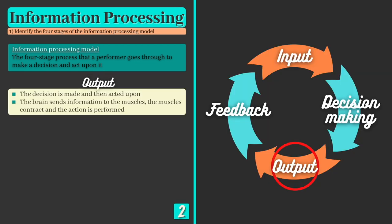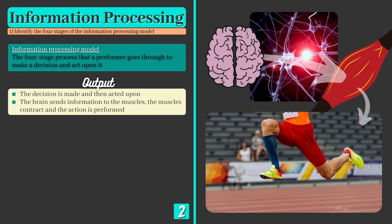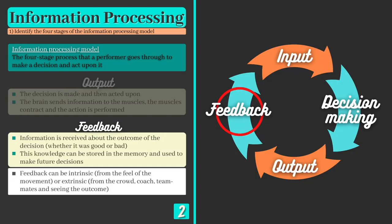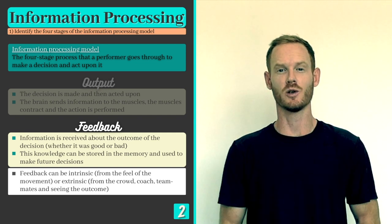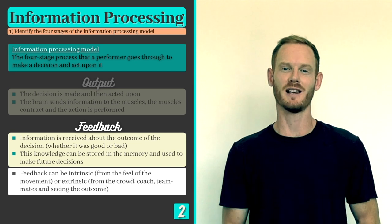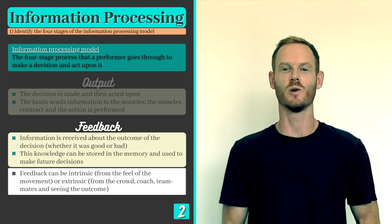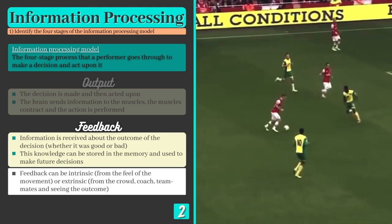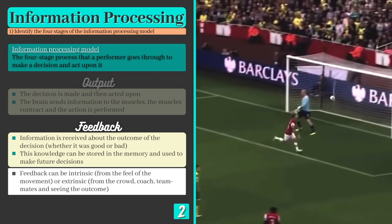Next comes the output stage, where the decision is acted upon. The brain sends information to the muscles via a network of neurons, the muscles contract and the action is performed. The final stage is the feedback stage, where information about the performance and outcome of the skill is received. If the decision turned out to be a bad one, for example, it would be stored in the memory, helping the performer to avoid making a similar decision in the future. Feedback is only stored in the long term memory with frequent and sustained practice, and elite athletes have usually practised so much that their decisions are almost immediate.